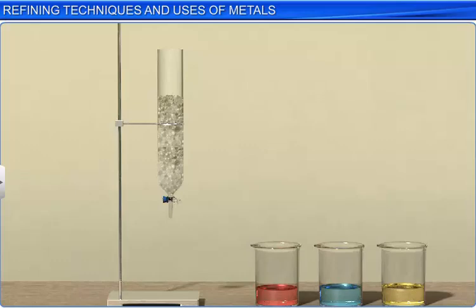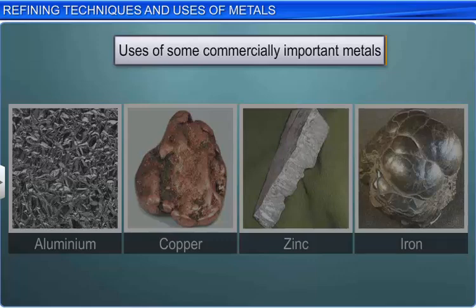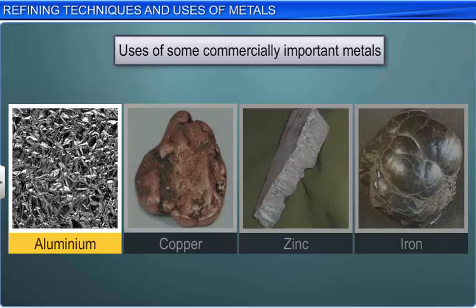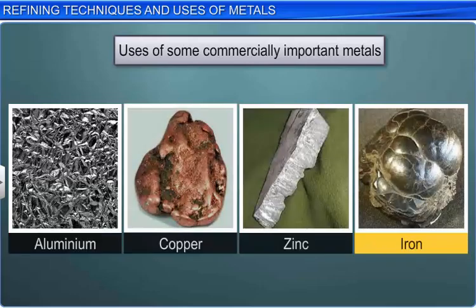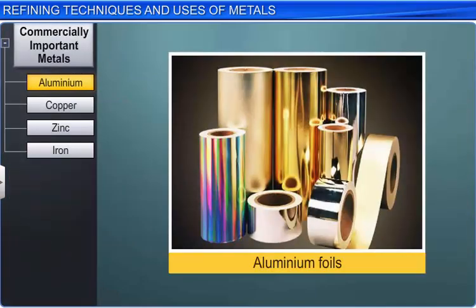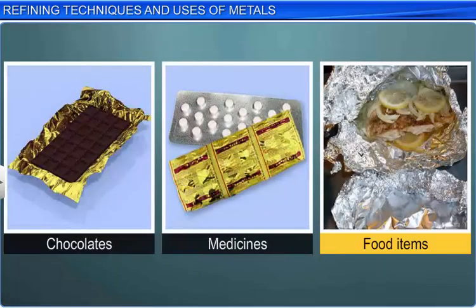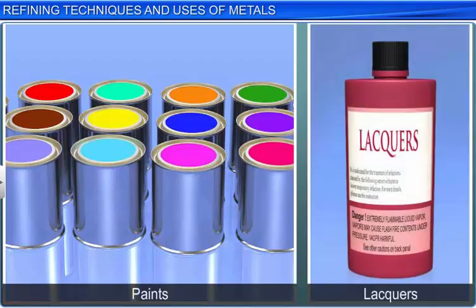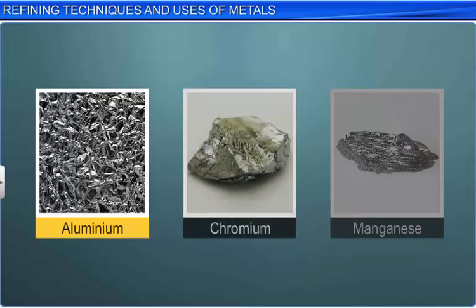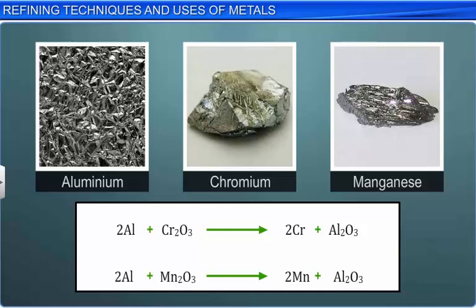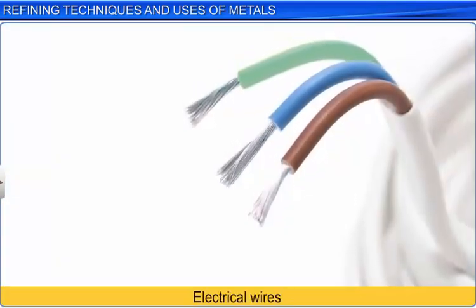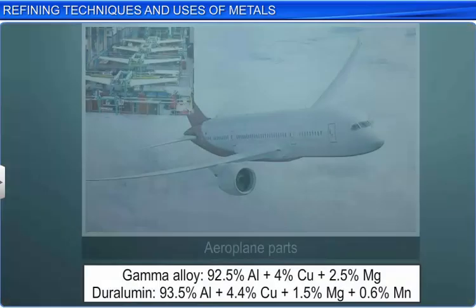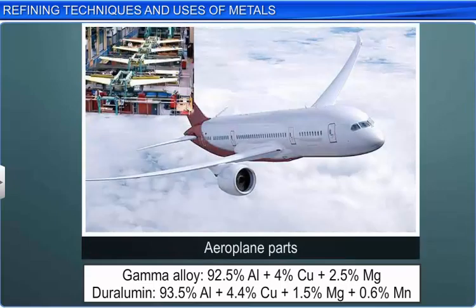Let us now study the uses of some commercially important metals such as aluminium, copper, zinc and iron. Aluminium foils are used as wrappers for chocolates, medicines and food items. Aluminium dust is used in paints and lacquers. Since aluminium is more reactive than chromium and manganese, it is used in the extraction of these elements from their oxides. Aluminium is used to make electrical wires as it is a very good conductor of electricity. Aluminium alloys are light and very useful — for example, gamma alloy and duralumin, which are alloys of aluminium, are used for making aeroplane parts.